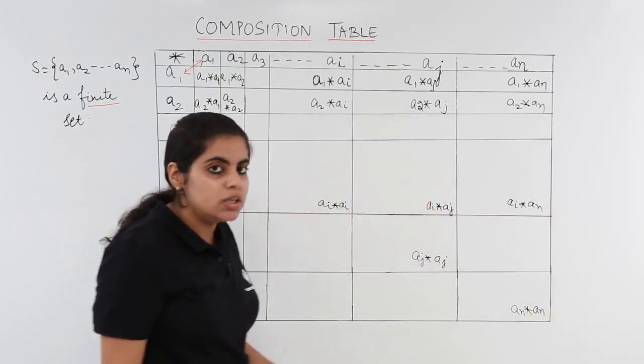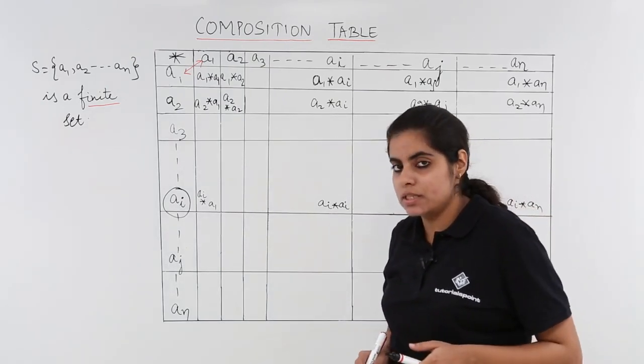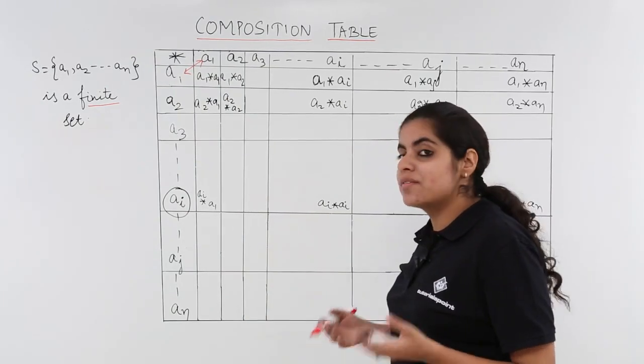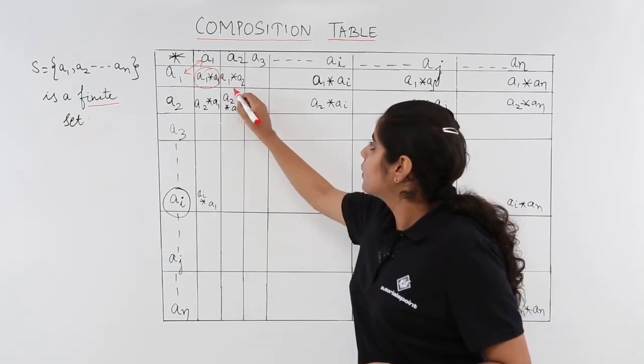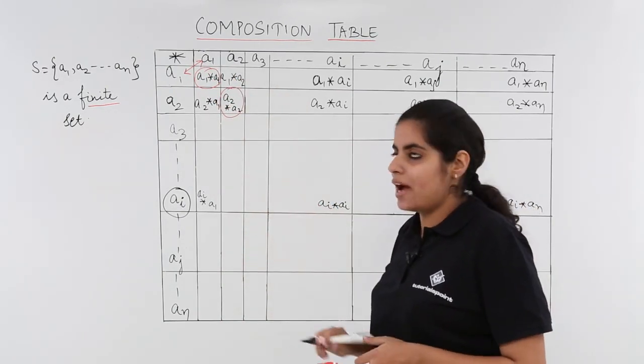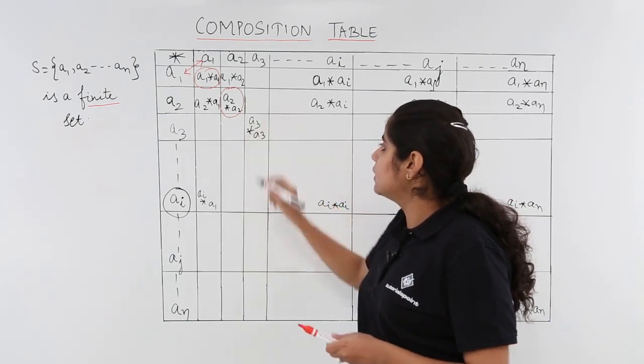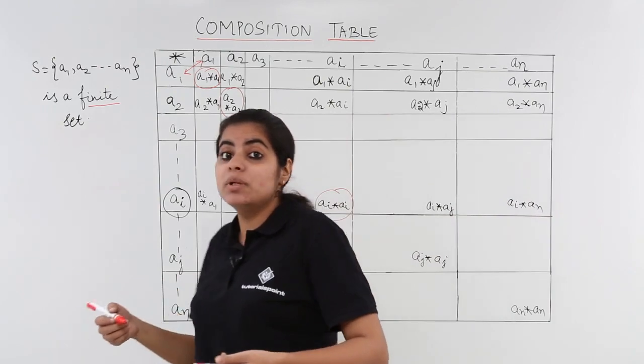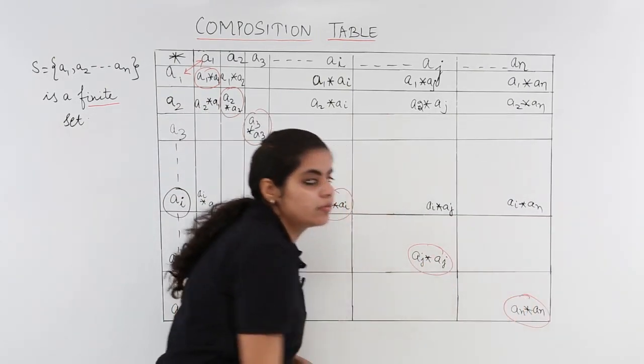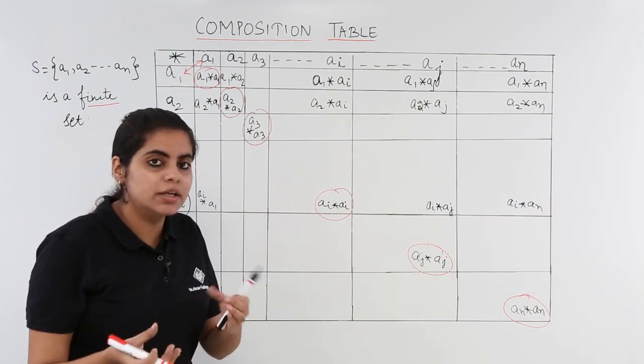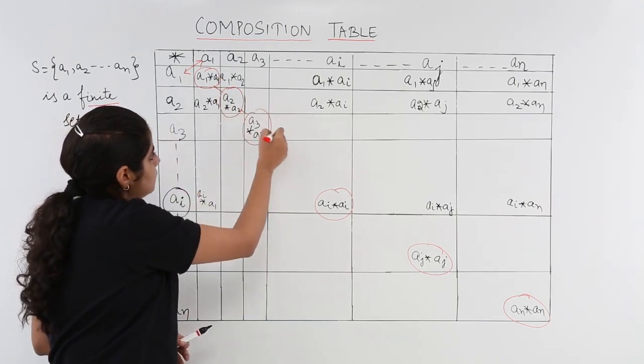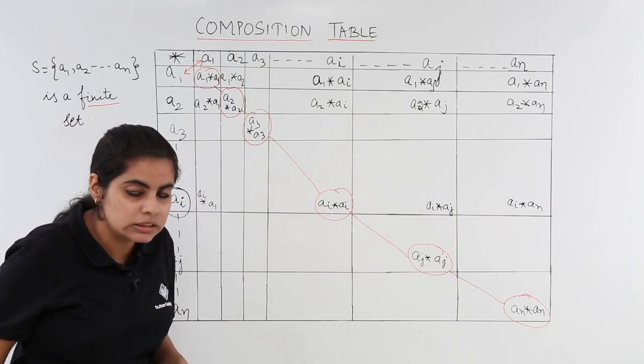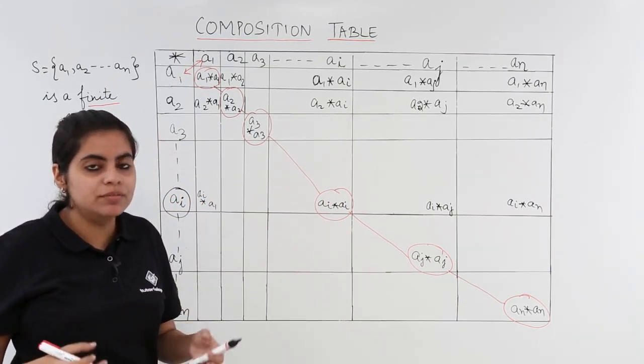So what I mean to reflect from here is that there are some diagonal elements. What is a diagonal? We already know that in a rectangle also we have a diagonal, that means a slanting line wherein you have similar sort of elements. That means a1 star a1, a2 star a2, and here it should have been a3 star a3. Similarly, you will have a4 star a4, a5 star a5, ai star ai, and similarly aj star aj, an star an. These elements which are treated with altogether the same element, they form a diagonal, and the diagonal in an operation table is very much important for the sake of learning of commutativity especially.